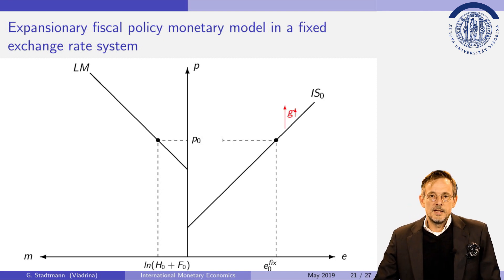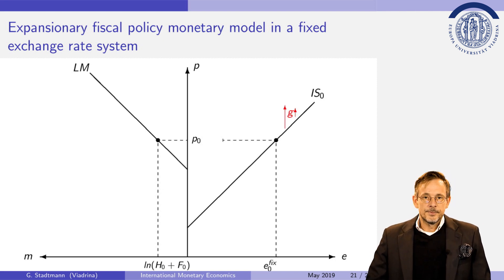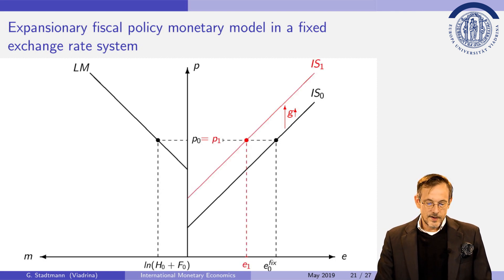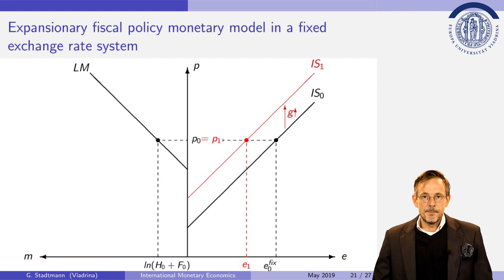Now the government increases government spending. This leads to a shift of the IS curve upwards. We have to find out how this shock would be digested in a floating exchange rate system. In a floating exchange rate system money supply is constant so that the goods prices are constant and the exchange rate would decrease, so an appreciation of the domestic currency would occur.